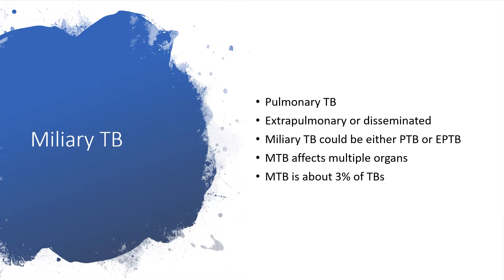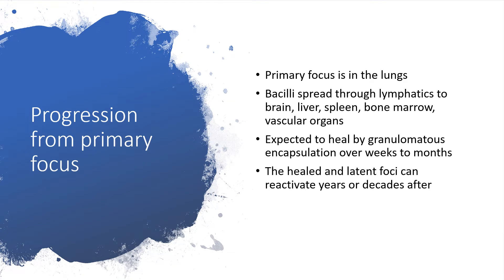Miliary tuberculosis affects multiple organs and represents just about 3% of all different forms of tuberculosis. Progression begins from the primary focus, which is always in the lungs. From there, the bacilli spread through the lymphatic system to the brain, liver, spleen, bone marrow, and vascular organs. It is expected to heal by granulomatous encapsulation over weeks to months.